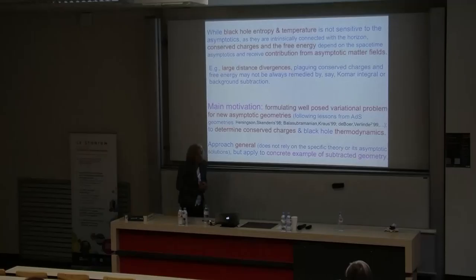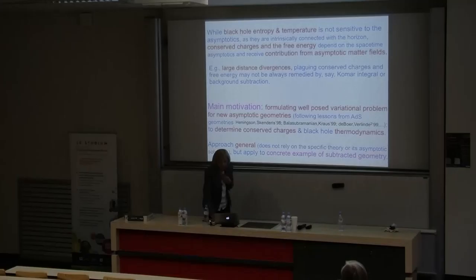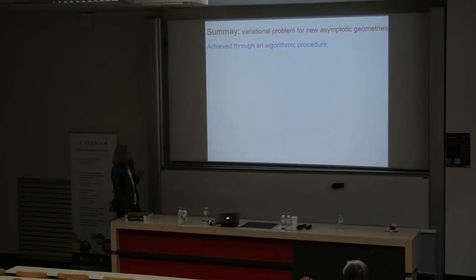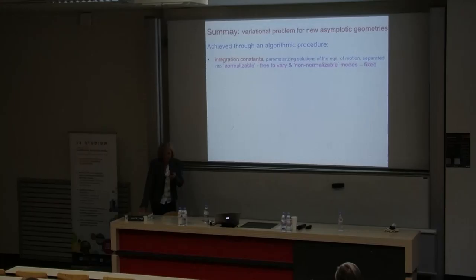Via this well-posed variational problem we can determine corresponding conserved charges and derive all the consequences of black hole thermodynamics for such exotic geometries. This approach is in principle general — it does not necessarily rely on a specific theory or on a specific asymptotic solution. A large part of this talk will be devoted to applying it to the example of the previously mentioned subtracted geometry. The addressing of the variational problem for new asymptotic geometries can in principle be formulated in a rather algorithmic way.